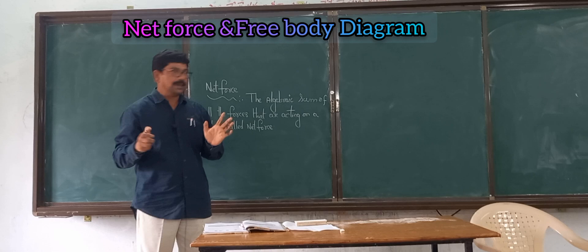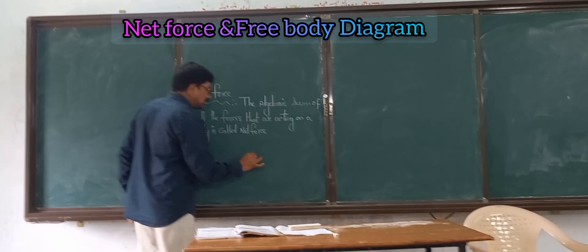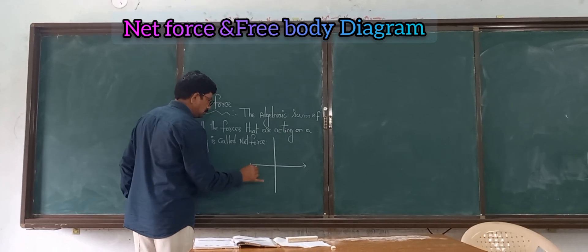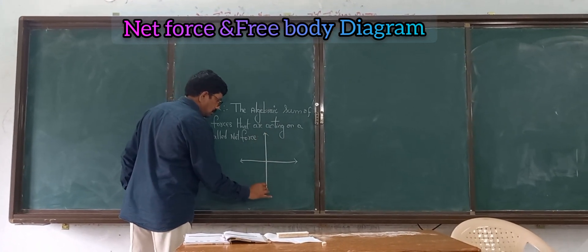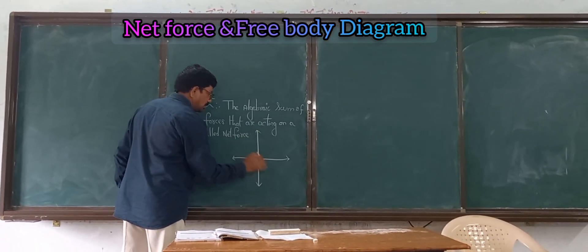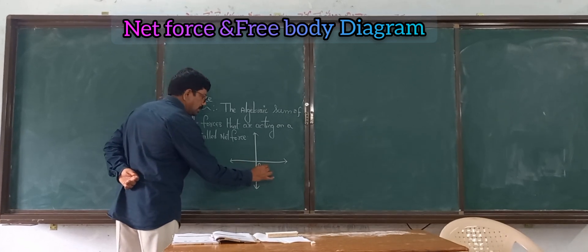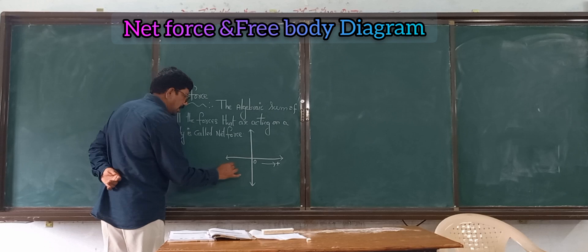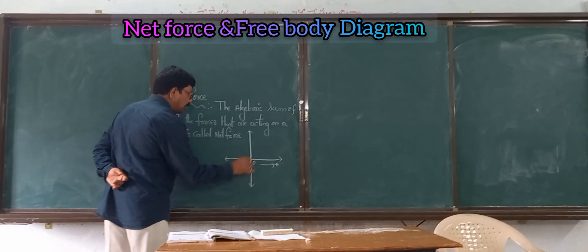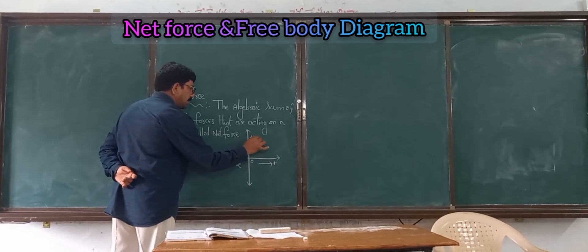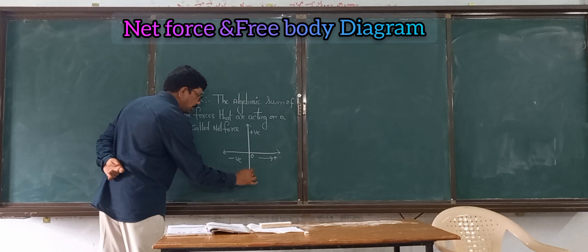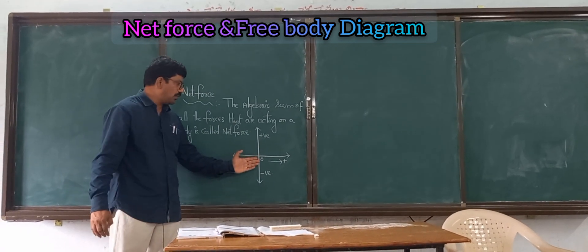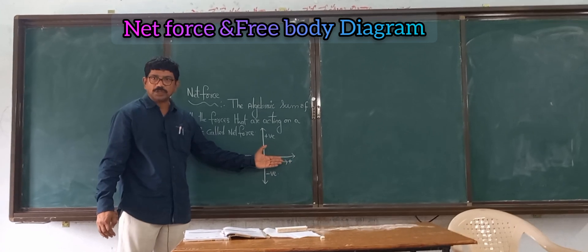Towards the right side of the x-axis, you take positive. I am drawing the coordinate axis. This is the origin. Towards the right side of the origin, you add the forces. Towards the left side of the origin, you subtract the forces. Above the origin, forces are positive; below the origin, forces are negative.